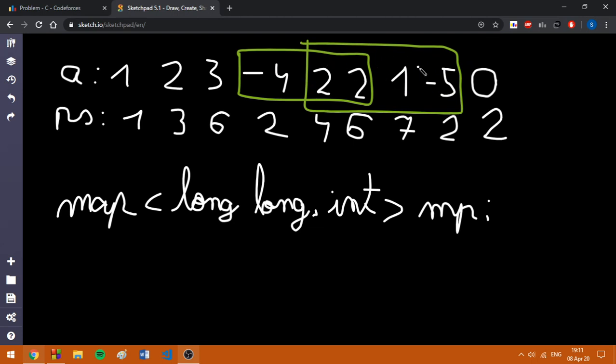2 plus 2 plus 1 minus 5 is equal to zero. Now, our approach will be basically like this. At some step, we are going to check if we have another position equal to zero.